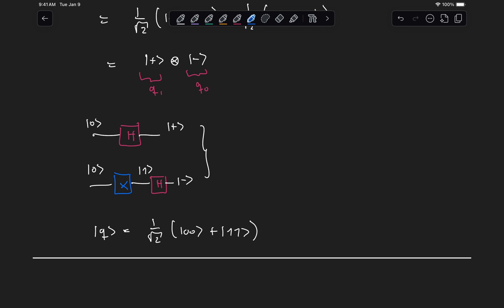Because these two components are all different from each other. And this is what we call an entangled state.